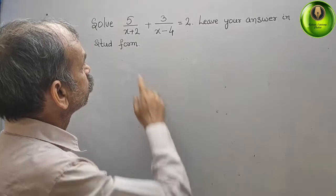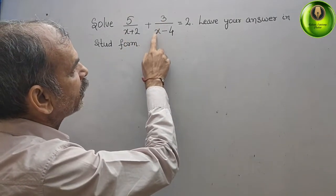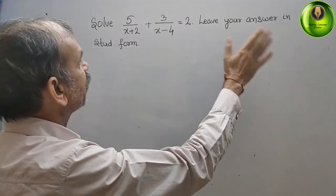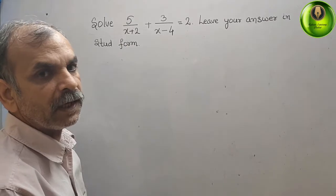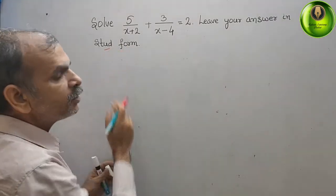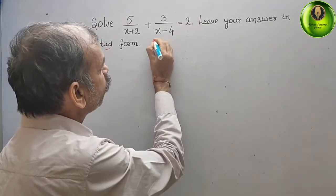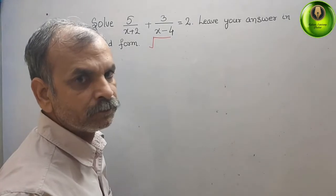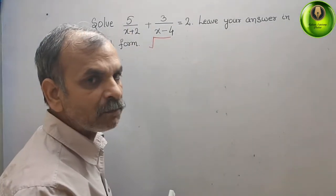The question is: solve 5/(x+2) + 3/(x-4) = 2, and leave your answer in surd form. First, we will understand what surd form is — that means we have to leave our answer in square root form.